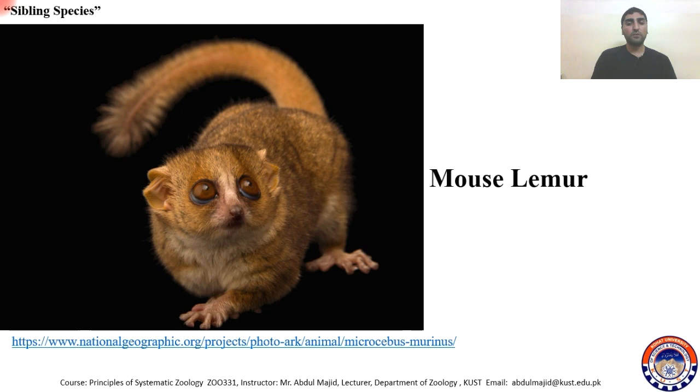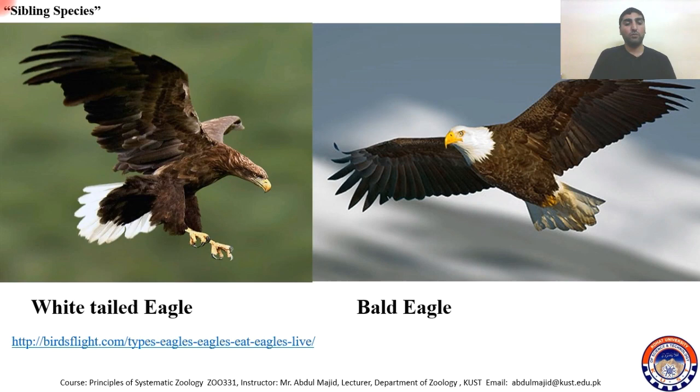Mouse lemur has 16 sibling species. The white-tailed eagle and the bald eagle are also sibling species. Here are many members of the mouse lemur group that are sibling species, and the white-tailed eagle and bald eagle are likewise considered sibling species.